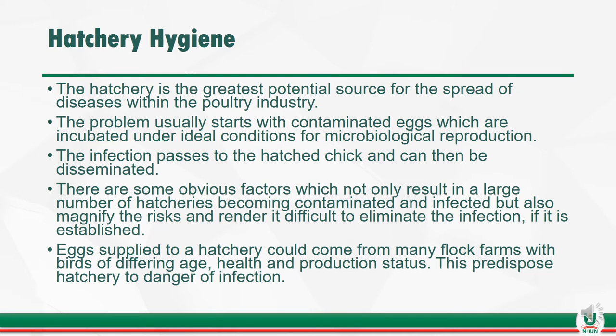The hatchery is the greatest potential source of disease spread within the poultry industry. The problem usually starts with contaminated eggs which are incubated under ideal conditions for microbial reproduction. Infection passes to the hatched chick and can then be disseminated. Obvious factors not only result in large numbers of hatcheries becoming contaminated and infected but also magnify the risks and make it difficult to eliminate infection once established. Egg supply to a hatchery could come from many flocks of different age, health, and production status, predisposing the hatchery to dangerous infections.